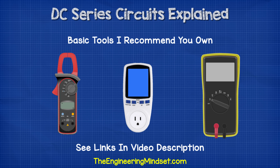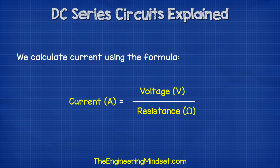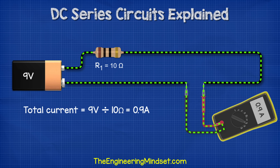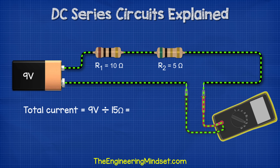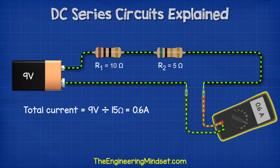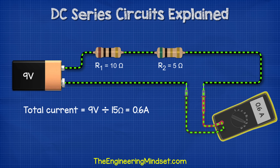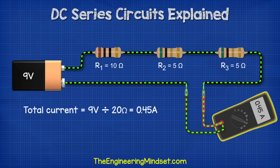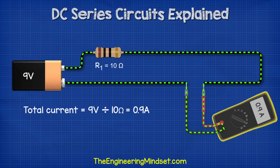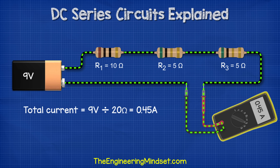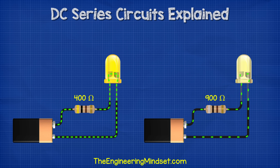We can calculate the total current of the circuit by dividing the voltage by the resistance. So if we connect a 10 ohm resistor to a 9 volt battery, 9 volts divided by 10 ohms gives us 0.9 amps. If we added another 5 ohm resistor, that gives us 15 ohms of resistance, so 9 volts divided by 15 ohms equals 0.6 amps. And if we added another 5 ohm resistor, that gives us 20 ohms, so 9 volts divided by 20 ohms equals 0.45 amps. As we add more resistance, the current reduces, so less electrons are flowing and we can do less work. We can visualize that by connecting an LED with a resistor into a circuit.